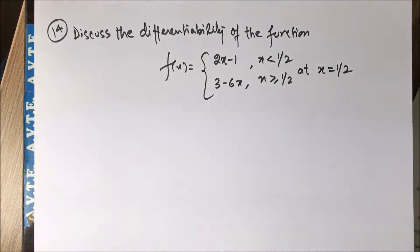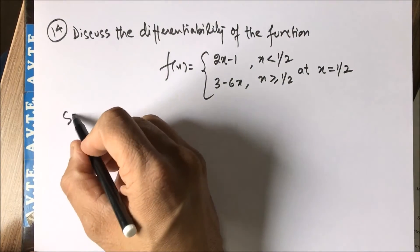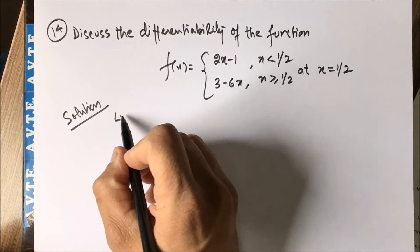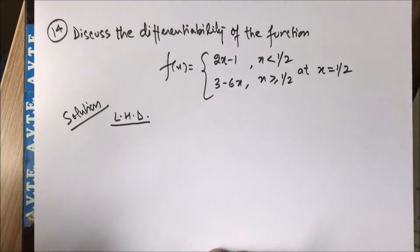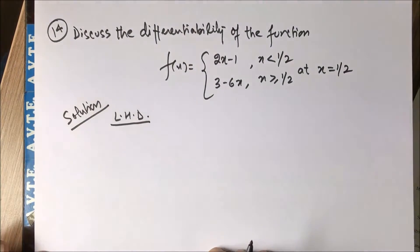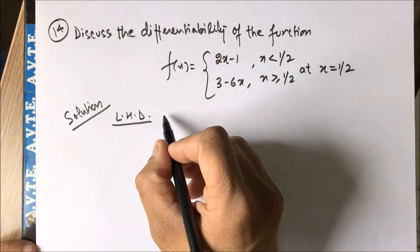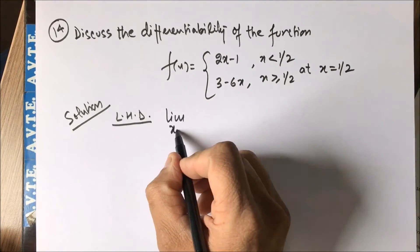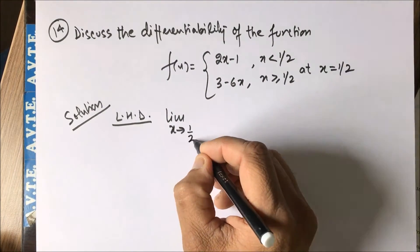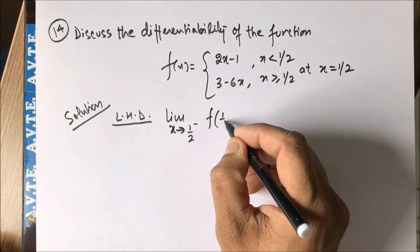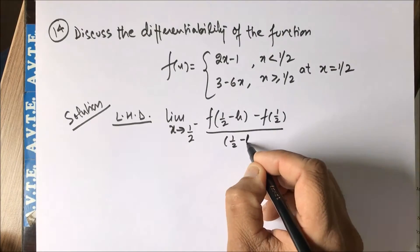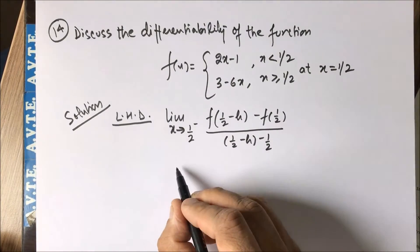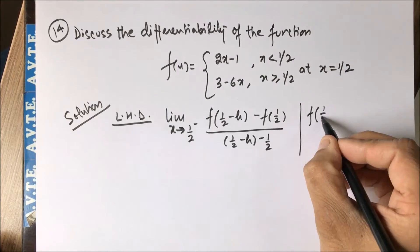Since the left-hand derivative is different from the right-hand derivative, this function cannot be differentiable at x equal to 1/2. Now we know the answer, but we'll make it subjective and apply the theorem. We are calculating the left-hand derivative — remember it is not left-side continuity, it is the left-hand derivative — and the formula goes like this.